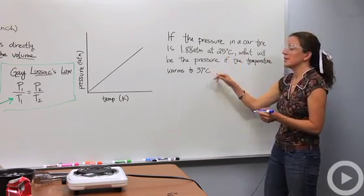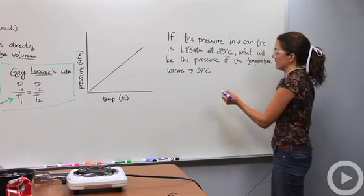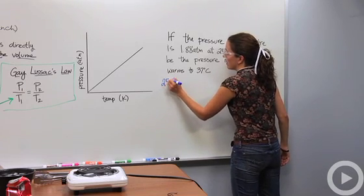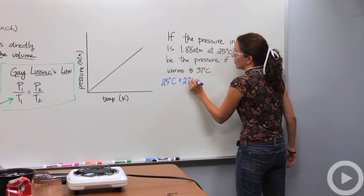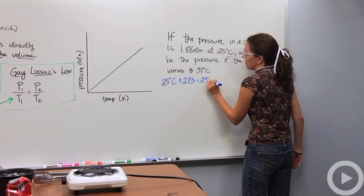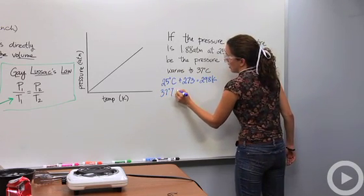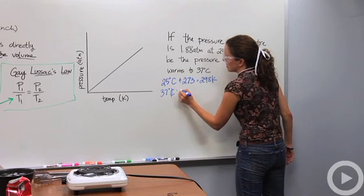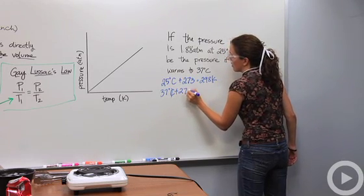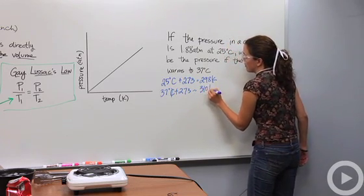So, first I want to make sure these temperatures are in Kelvin, not in Celsius. So I'm going to change them. 25 degrees Celsius plus 273 is equal to 298 Kelvin. 37 degrees Celsius plus 273 is equal to 310 Kelvin.